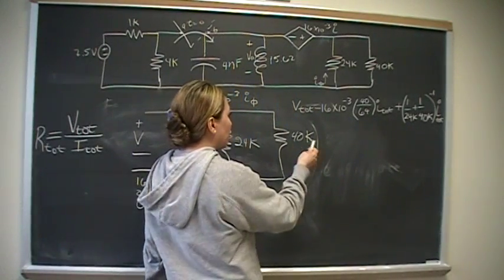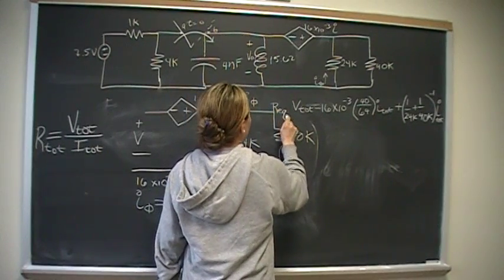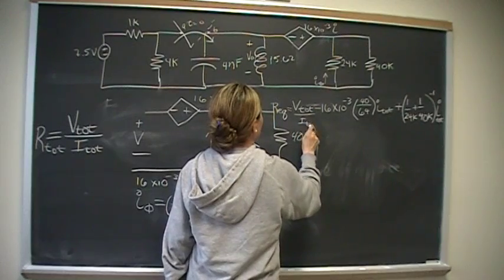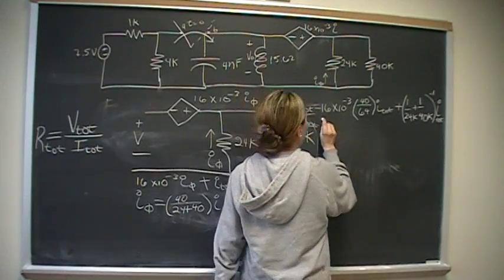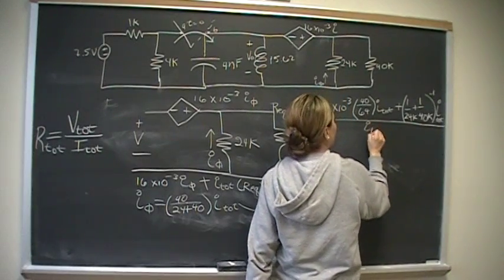which is 1 over 24K plus 1 over 40K raised to the negative 1 times I sub total. So we're going to have a total. But we're looking for REQ.